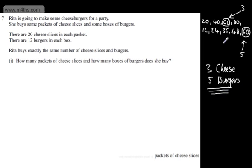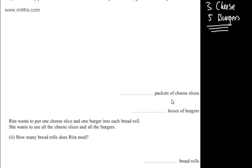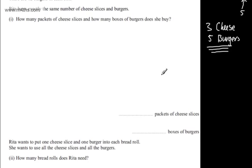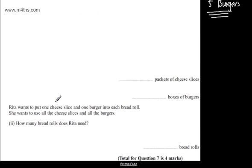My argument is that she might have bought 6 of these and 10 of these, since it doesn't give us any definitive indication — if we go to 120 and 120 we're in the same situation. If you do that then you will get marks for it. So the minimum answer is 3 lots of cheese and 5 lots of burgers.